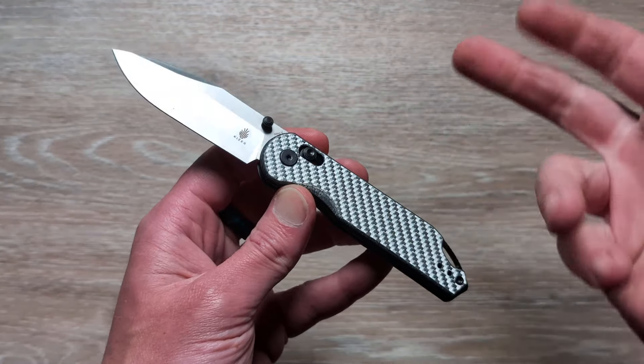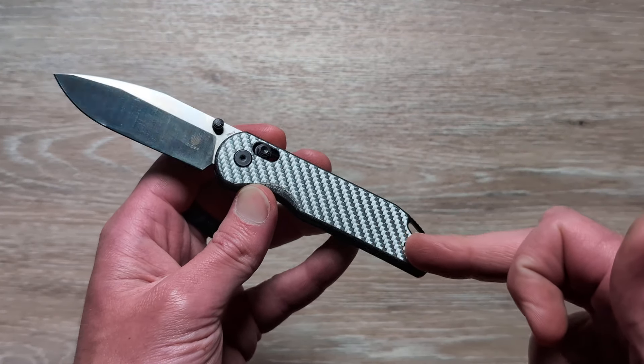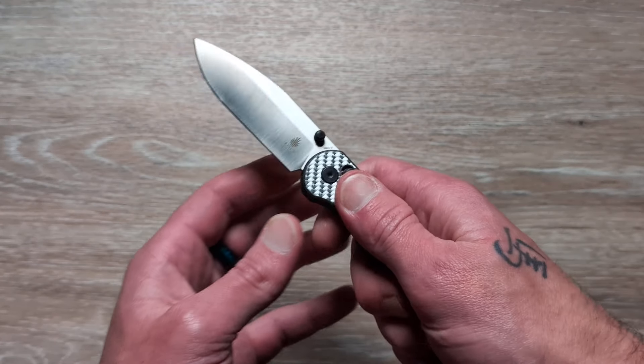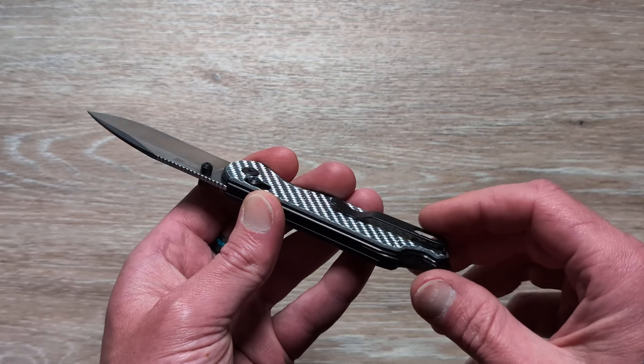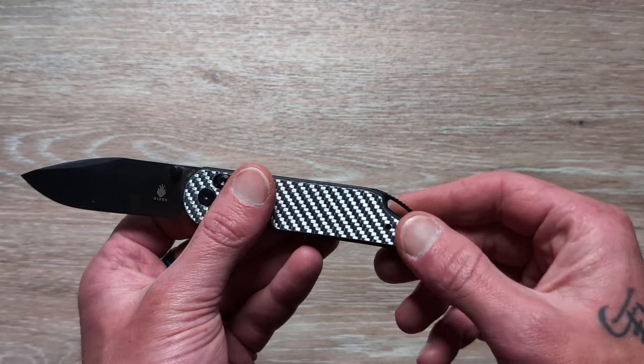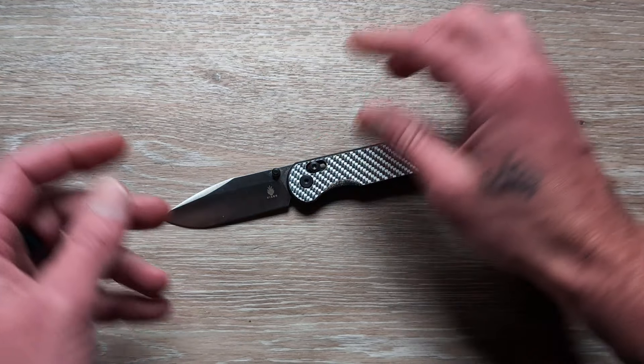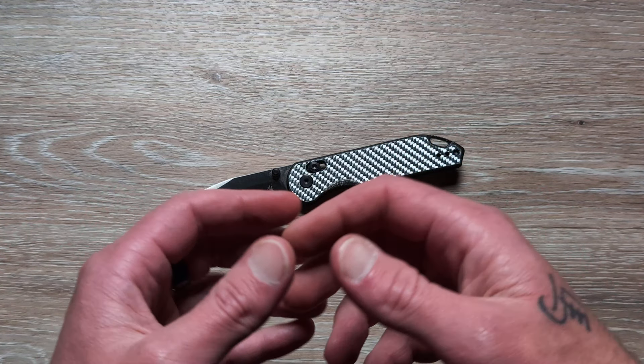It's going to be coming in several different handle materials. This is like a G10 and carbon fiber silver twill overlay. I like it. It looks good. It feels good. And best of all, it's very inexpensive, nice steel, deep carry rollover clip, and it is going to be reversible. I will have all of these knives linked down below in the description. Those do help out the channel if you use them, but that is up to you if you want to do so.